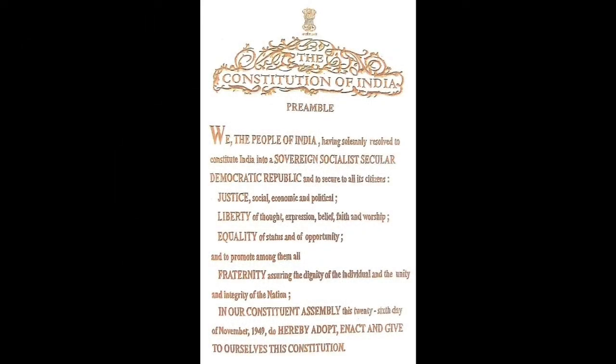The Constitution of India Preamble: We, the people of India, having solemnly resolved to constitute India into a sovereign, socialist, secular, democratic republic and to secure to all its citizens Justice — social, economic and political — Liberty of thought, expression, belief, faith and worship, Equality of status and of opportunity, and to promote among them all fraternity, assuring the dignity of the individual and the unity and integrity of the nation. In our Constituent Assembly, this 26th day of November 1949, do hereby adopt, enact and give to ourselves this Constitution.